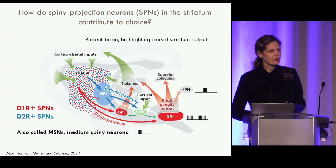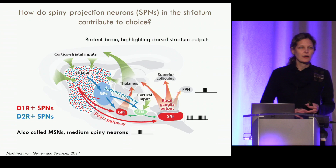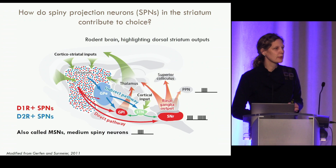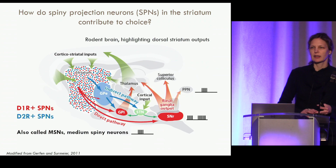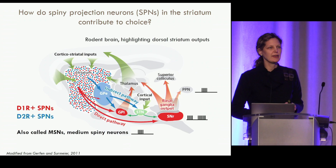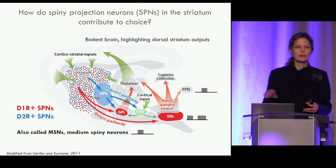I work in mouse models, which are great because we have genetic tools to look at individual cell types. In the striatum, you can see the salt-and-pepper red and blue dots representing spiny projection neurons — SPNs — of the striatum. There are at least two subtypes of these cells; they're intermingled in the striatum but make distinct projections out of the striatum.